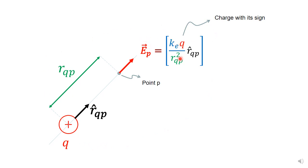The formula is kq over r squared times r-hat qp, where if you have a charge and you want to get the electric field at point P, r-hat qp points from the charge to the point where you want to calculate the electric field. That point has no charge at all, it's just empty space. You have to put the charge with its sign for this equation to work correctly, and you have to get the unit vector correctly, pointing from the charge to the point. r qp is just the distance between the charge and the point.